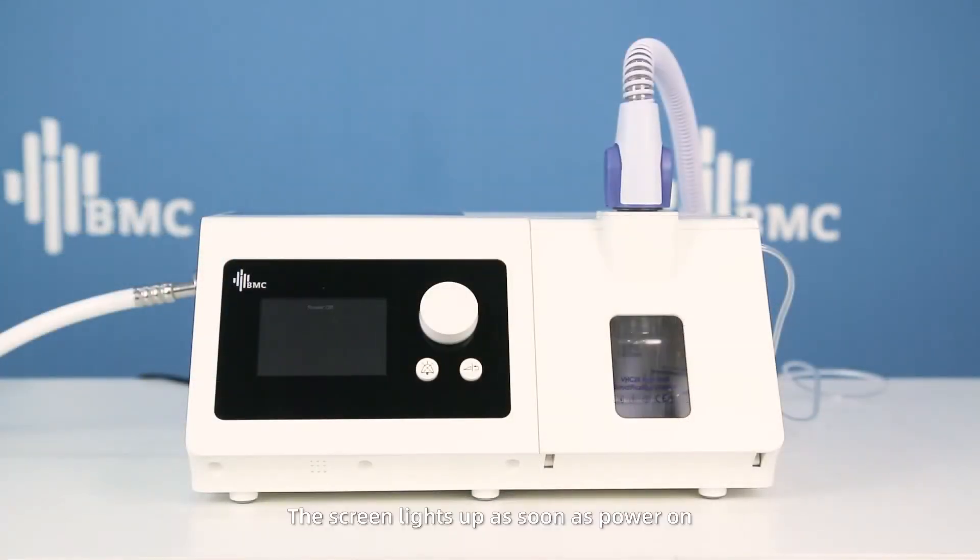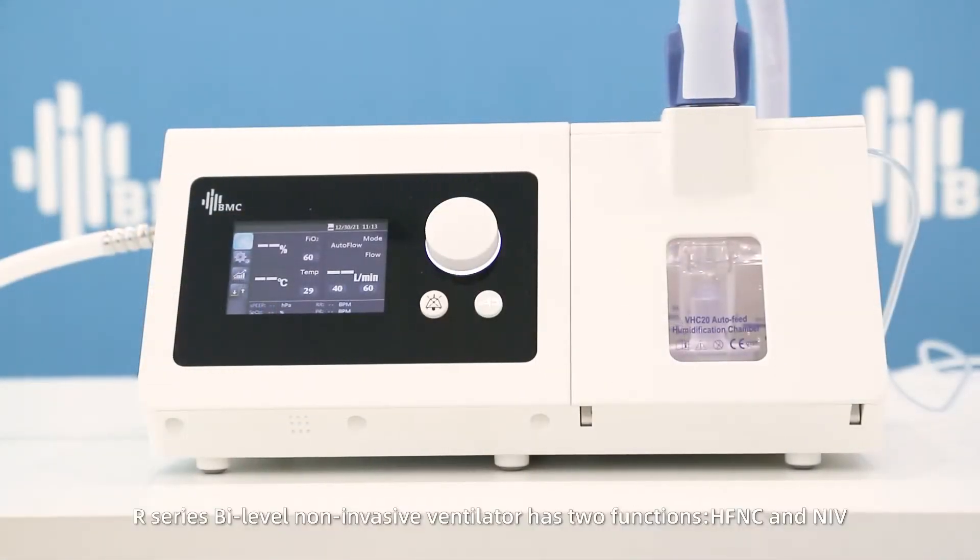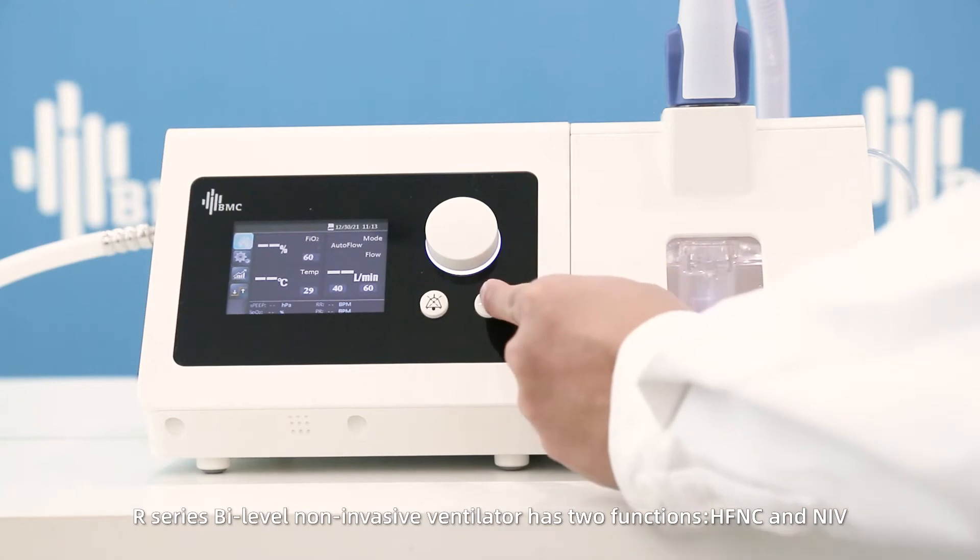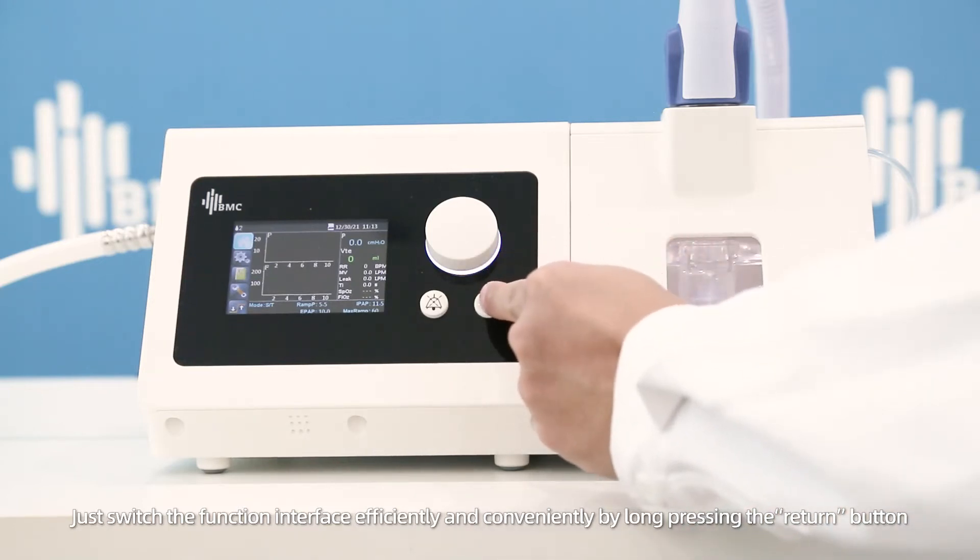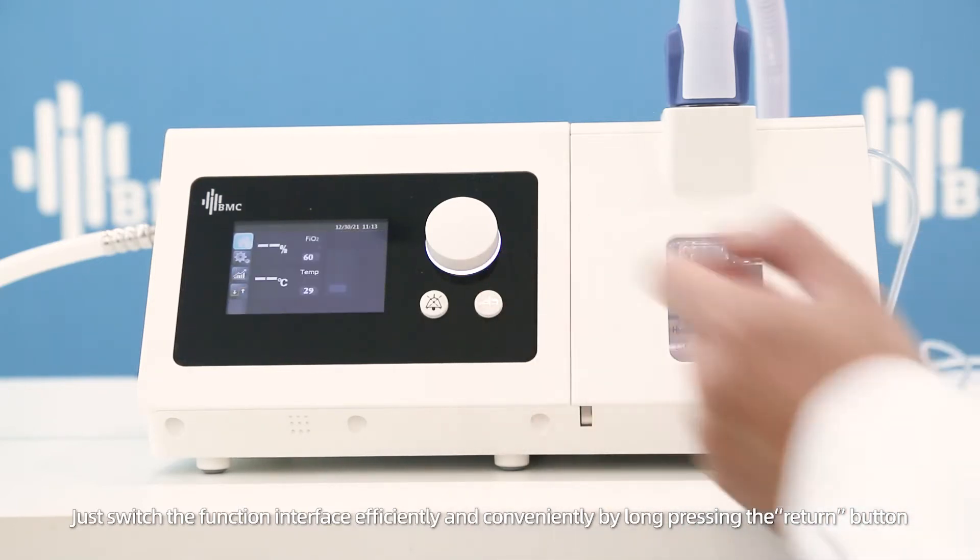The screen lights up as soon as power is on. R-series bi-level non-invasive ventilator has two functions: HFNC and NIV. Just switch the function interface efficiently and conveniently by long pressing the return button.